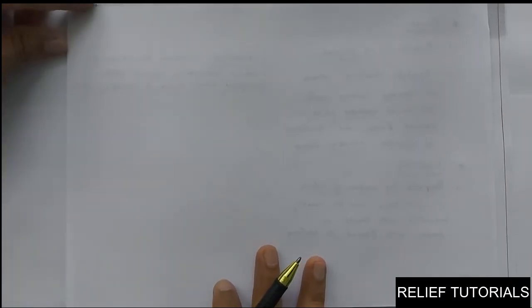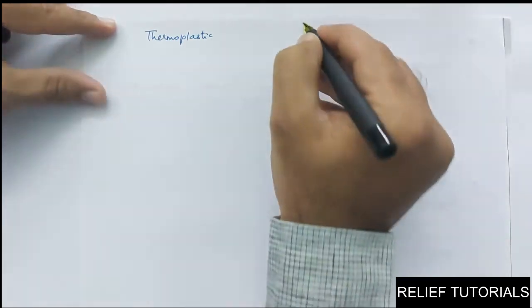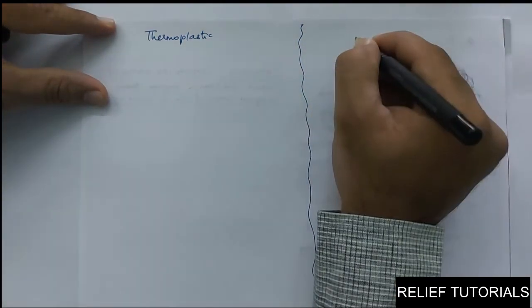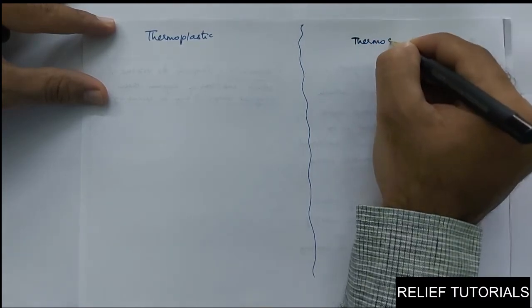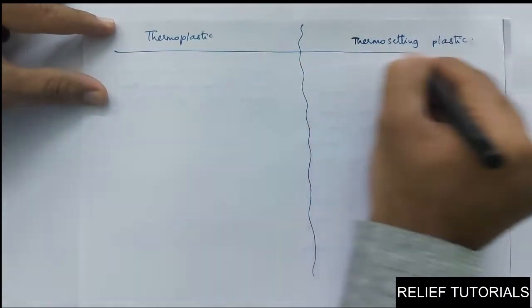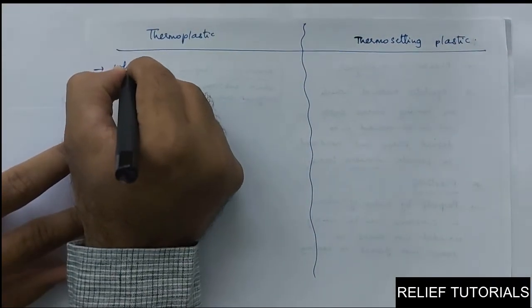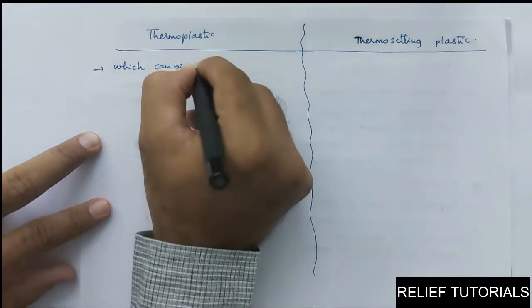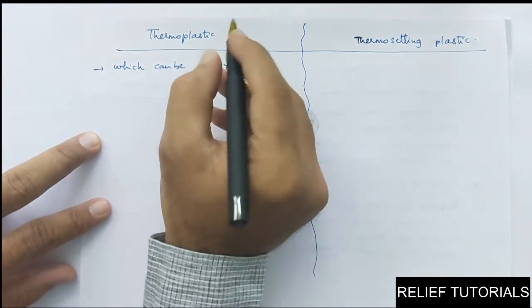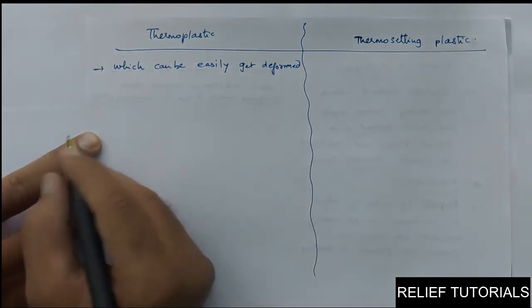There are two types of plastic mainly: thermoplastic and thermosetting plastic. What do you mean by thermoplastic? The plastic which can be easily deformed on heating — this type of plastic can easily get soft and deformed when heated.